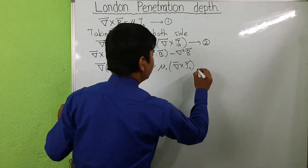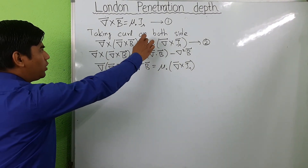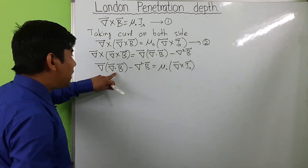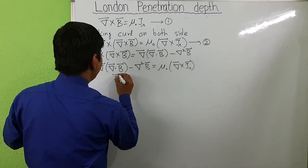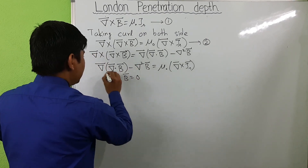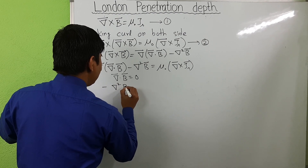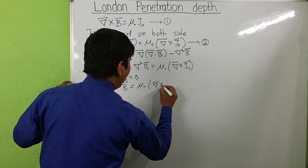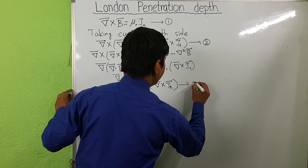From Maxwell's equation we know that divergence of B equals zero. Substituting this, the equation reduces to: minus grad-squared B equals mu-zero times curl of j_s. Let this be equation three.